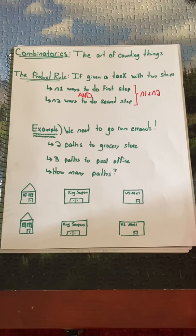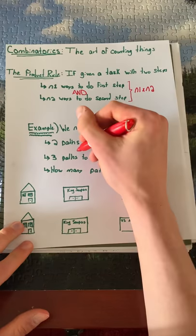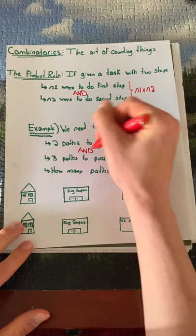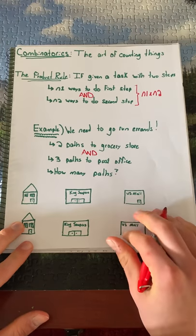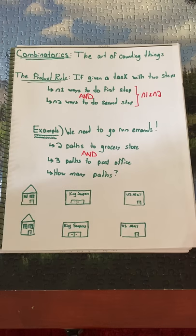So let's do an example problem. We need to run some errands. We have two paths we can take to the grocery store and three paths we can take to the post office. How many paths can we take?